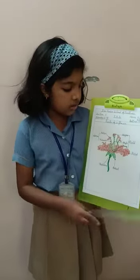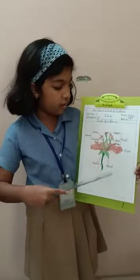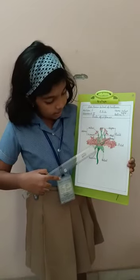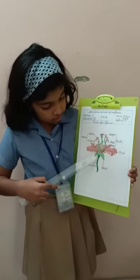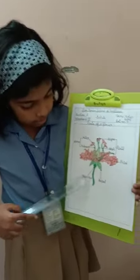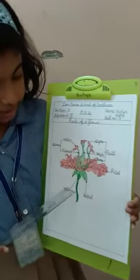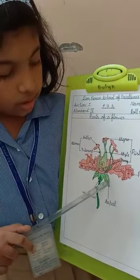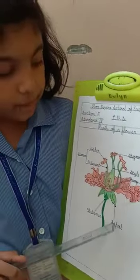This is how a structure of a flower will be. The stem-like structure we see down the flower is called the thalamus. This is the sepal.